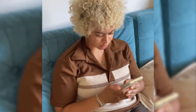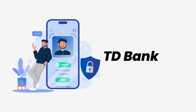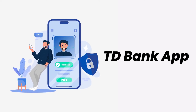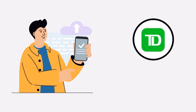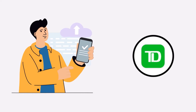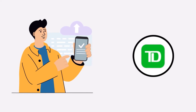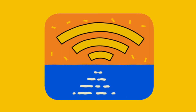It might be possible that you're not able to log into the TD Bank mobile app due to a connectivity issue. First of all, you need to make sure you have a strong and stable internet connection. To do so, do a quick test — simply open up an app that runs on the internet, other than the TD Bank mobile app, and check if it's working.